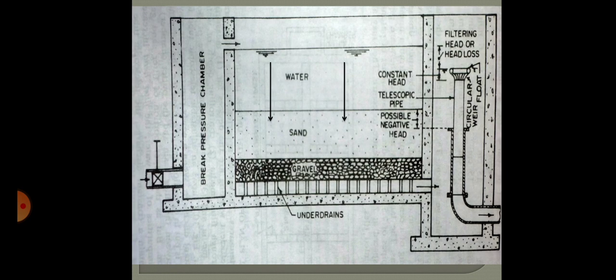The main effect of the slow sand filter is to remove turbidity, which is done by straining the water. It also removes bacteria through biological action. However, it is not particularly effective in removing colloidal turbidity.